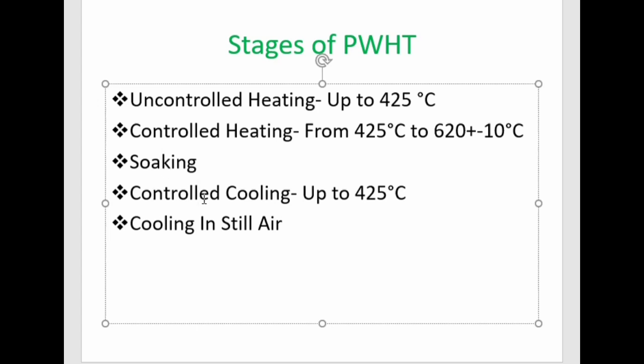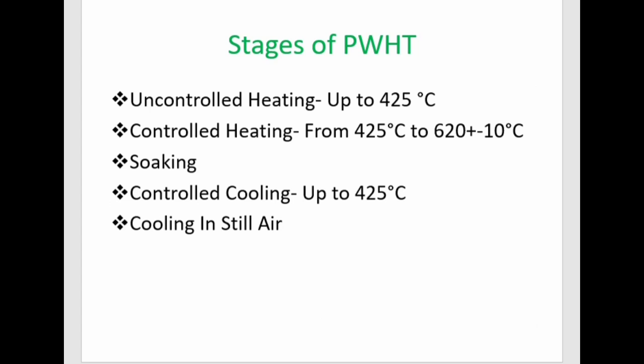The third stage is soaking — the process of keeping the pressure vessel at a particular temperature for a particular time period in order to relieve stresses. The fourth stage is controlled cooling from the soaking temperature of 620°C down to 425°C. The fifth stage: below 425°C, the vessel may be cooled in still air.